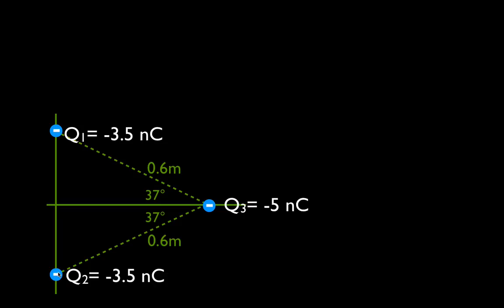This problem might look a little complicated because we have these angles, these distances, and different charges that are not on a straight line. But there are some important things to notice that will make this problem much easier. Q1 and Q2 are both minus 3.5 nanocoulombs, and the distance between Q3 and Q1, and Q3 and Q2, is the same — 0.6 meters. That means the angles are the same and the distances are the same, which will cut the amount of work basically in half.